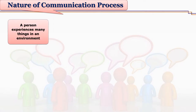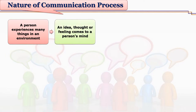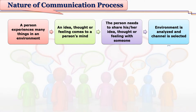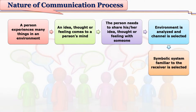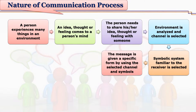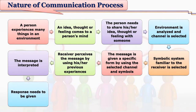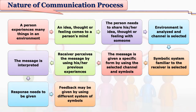If we see the nature of the communication process, we can see several steps. A person experiences many things in an environment. An idea, thought, or feeling comes to a person's mind. The person needs to share his or her idea, thought, or feeling with someone. The environment is analyzed and a channel is selected. A symbolic system familiar to the receiver is selected. The message is given a specific form by using the selected channel and symbols. The receiver perceives the message by using his or her previous experiences. The message is interpreted by the receiver. A response needs to be given. Feedback may be given by using a different system of symbols, and the communication process ends here.